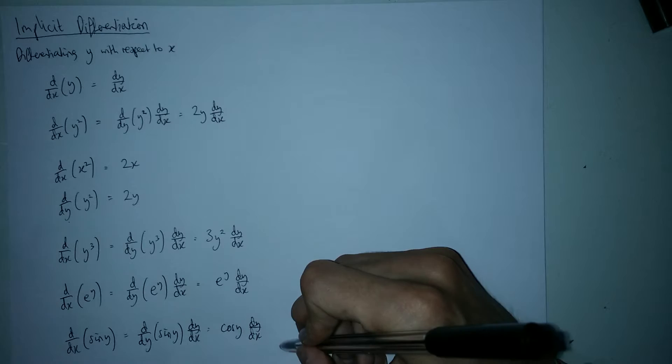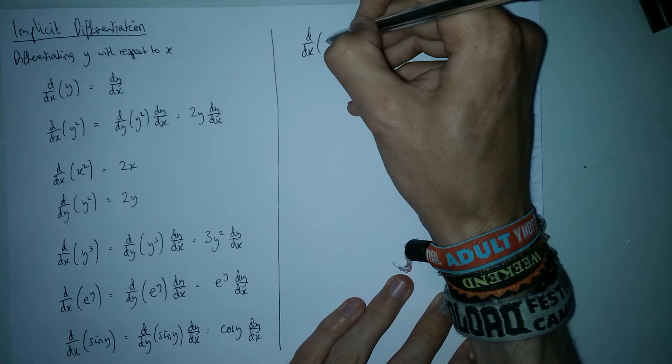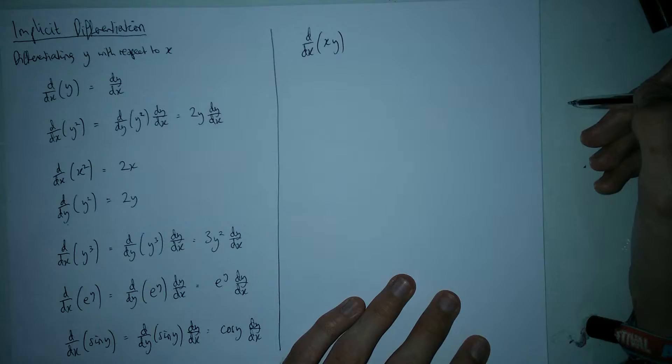That's all very well and good. The other thing that we want to talk about today is differentiating products, particularly products of x and y. Let's try and differentiate this thing here, x and y. Now we're going to use the product rule in this.